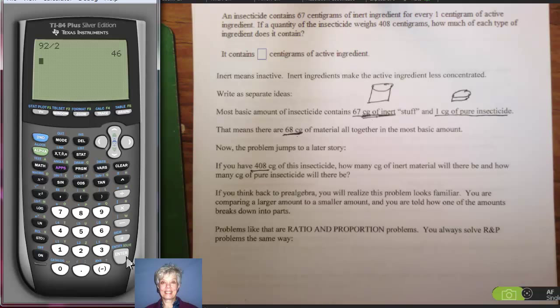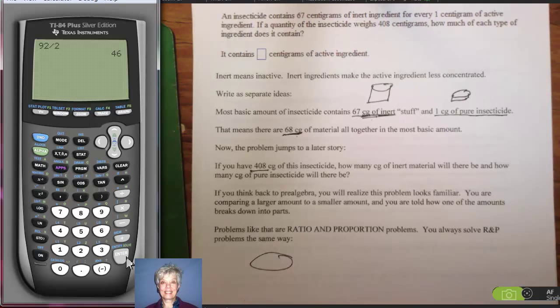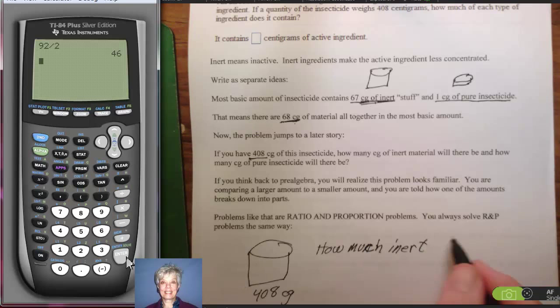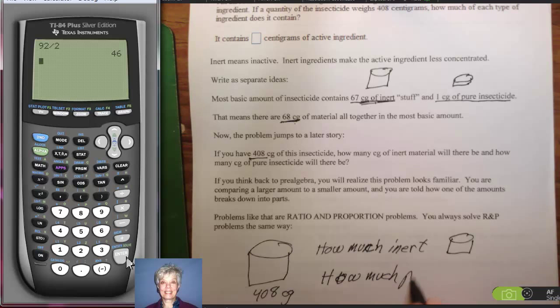So knowing that you have this 67 to 1 ratio, somebody brings you 408, a container of 408 centigrams, and says, okay, how much inert and how much pure? I'm calling it pure, the active ingredient. There's always going to be less of the pure. The inert is put in with the pure to make it less strong.